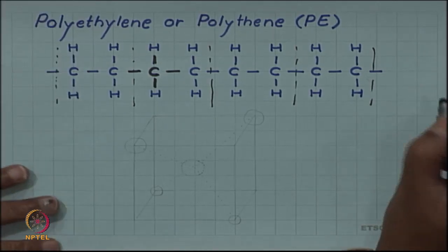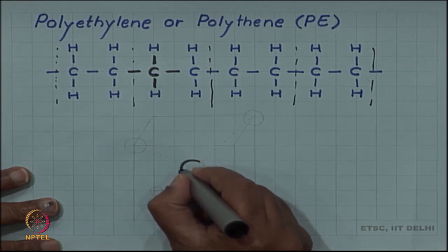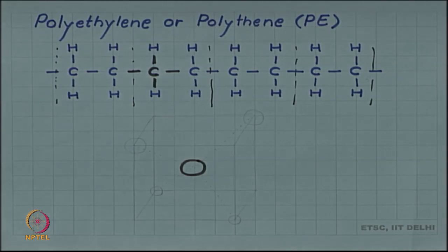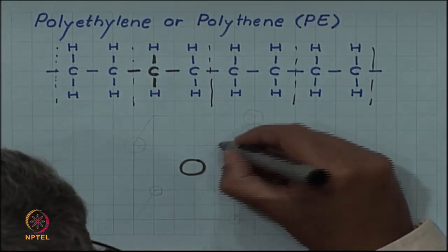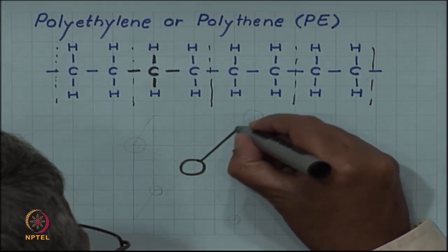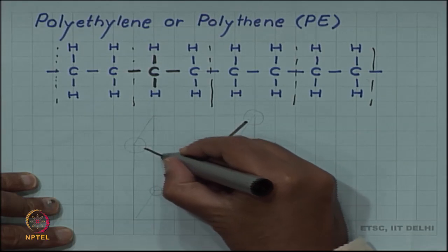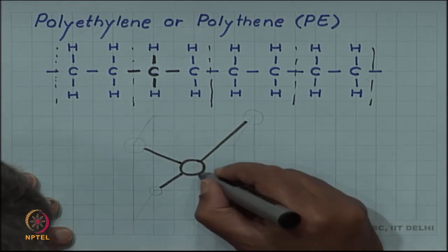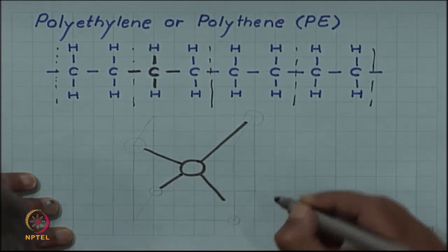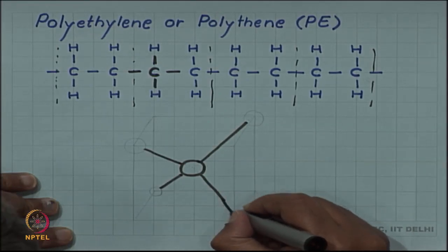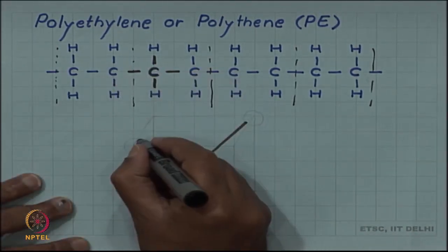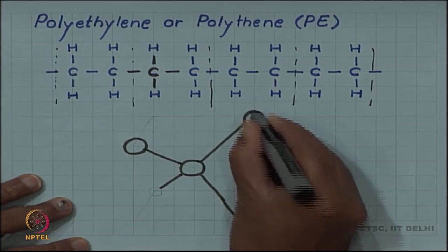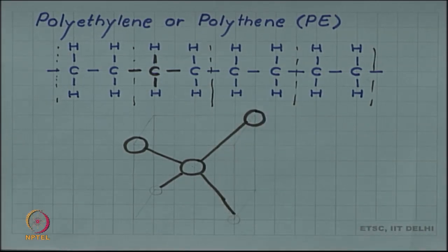One way to think about these tetrahedral bonds is to place a carbon atom in the center of a cube and then draw these bonds as body diagonals of the cube. The two bonds are connected to carbon atoms, and two are connected to hydrogen atoms.